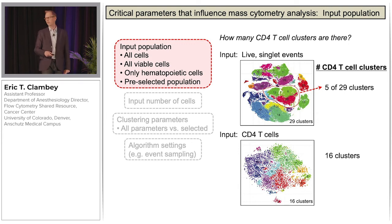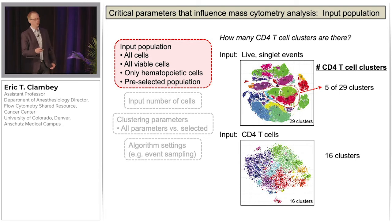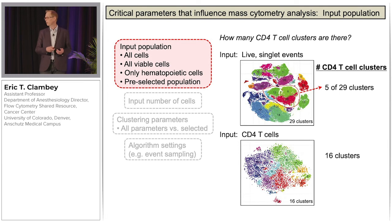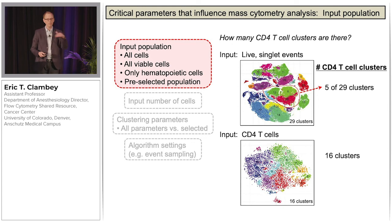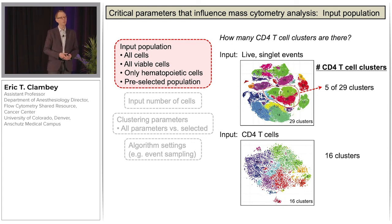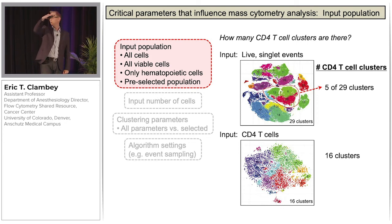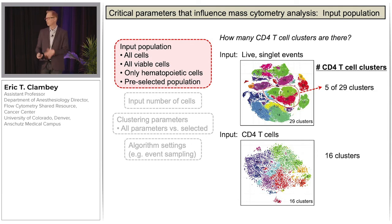Using the Phenograph clustering algorithm, we asked how many CD4 T cell clusters there are, comparing live intercalator-positive events on the top versus pre-gated CD4 T cells on the bottom. In the top case, five of 29 clusters were identified as CD4 T cells; in the bottom case, Phenograph says there are 16 clusters of cells. Whether you're zoomed out with a high-level view of your immune landscape or focused on a specific cell type will profoundly influence how you interpret the diversity of populations within your target cell of interest.